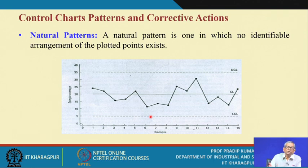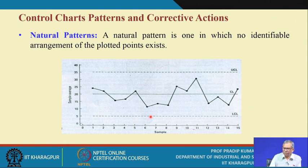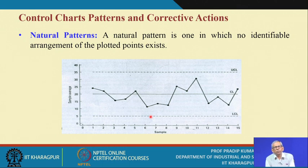Units with resistance above 24 ohms may potentially be reworked or rectified, whereas those below the LSL are declared scrap. This is a typical example; many such numerical problems will be taken up in separate exercise sessions to strengthen understanding.